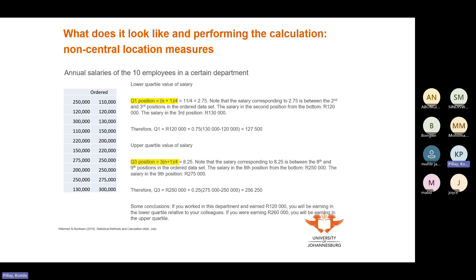We want to determine the lower quartile value of salary. As an employee or an organization, you'd want to know how many employees are paid in quartile one versus quartile three. The formula for Q1 position is (n + 1) / 4. With n = 10, that gives us 11 / 4.